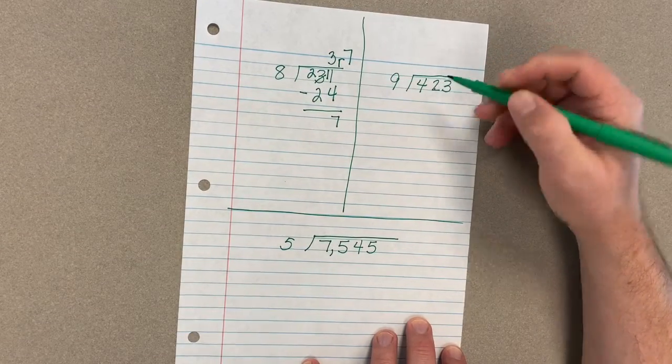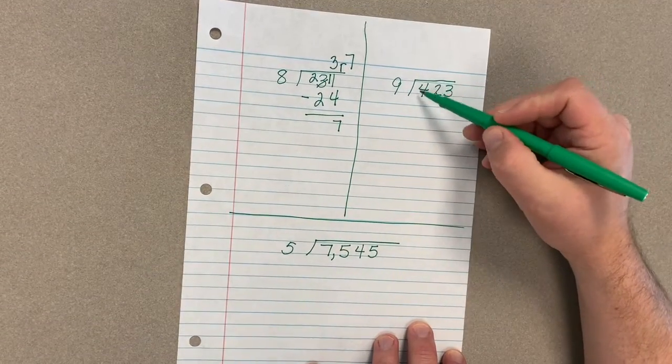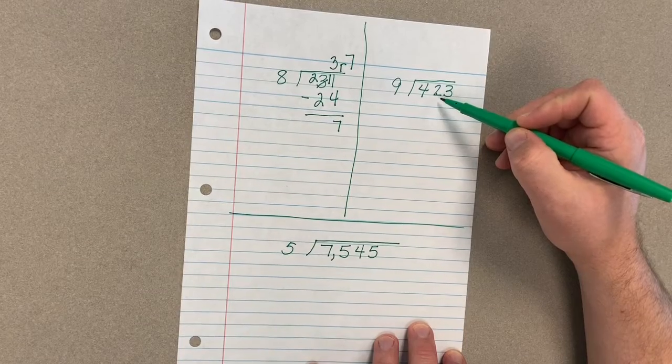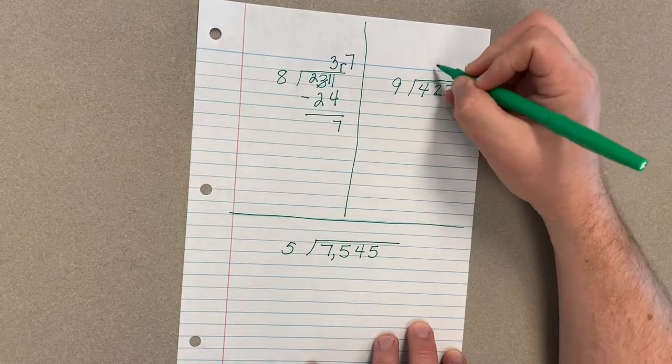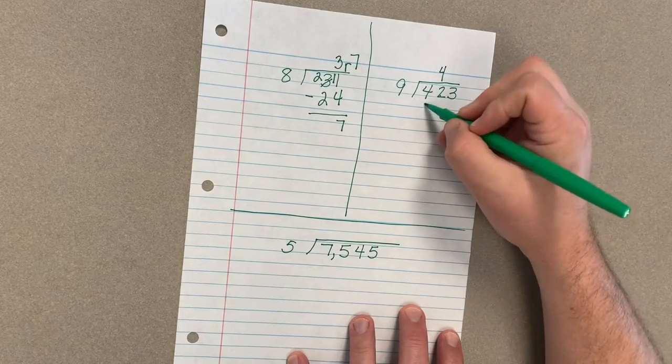Can I take groups of nine out of 42? I can. I have to know that nine times five is 45. That's going to be a little bit too big, so I'm going to use my next lowest number. So I'm going to say nine times four. Nine times four will give me 36.